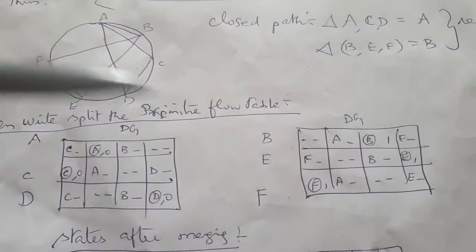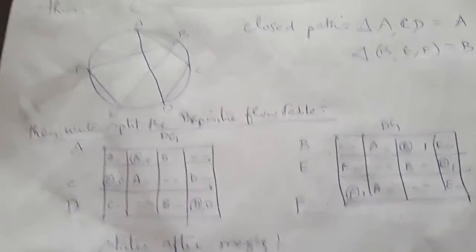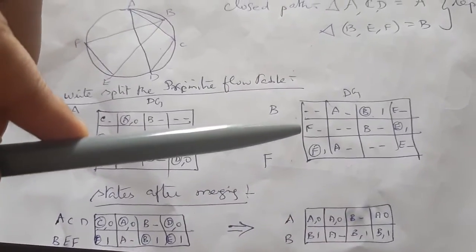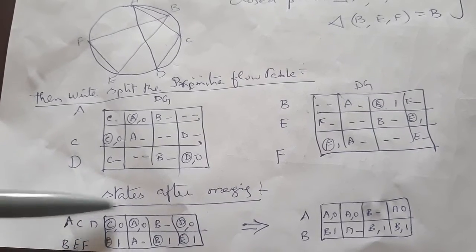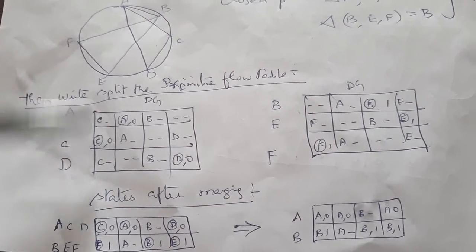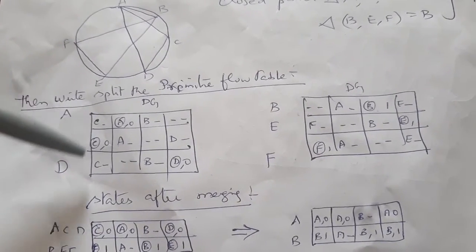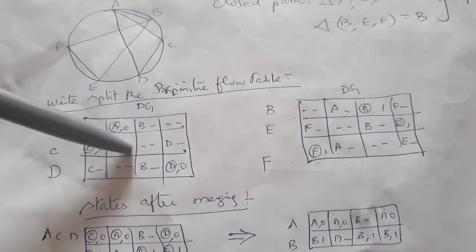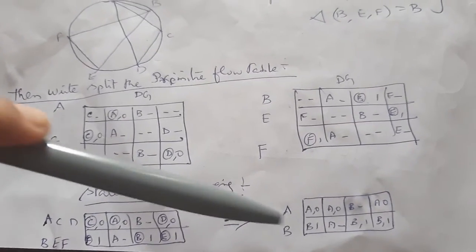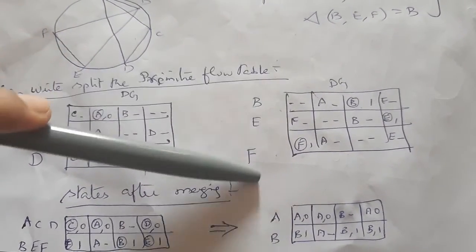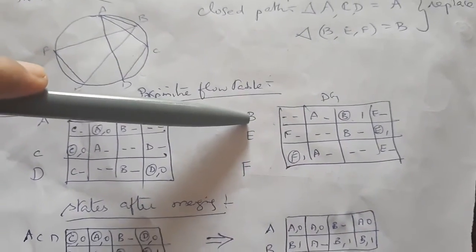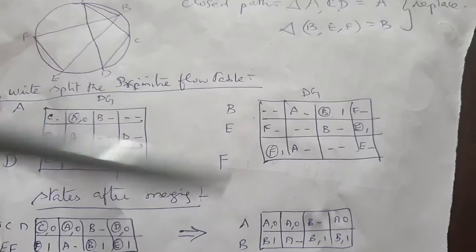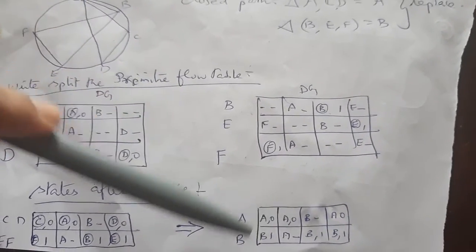Write down the three separate states from the primitive flow table — take A, C, D separately and B, E, F separately. Combine them into single rows: A,C,D becomes one row, B,E,F becomes one row. Replace C and D with A, and replace E and F with B. The resulting reduced table rows become: A — A, A, B, A; and B — B, A, B, B.